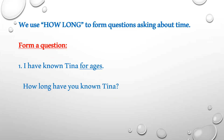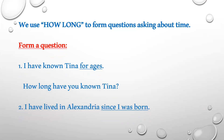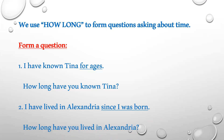The question would be: 'How long have you known Tina?' Another example: 'I have lived in Alexandria since I was born.' The underlined part is 'since I was born,' so they are asking about the starting point. We use 'how long' in the present perfect: 'How long have you lived in Alexandria?'